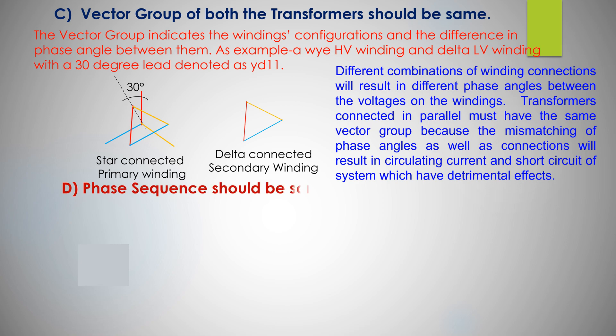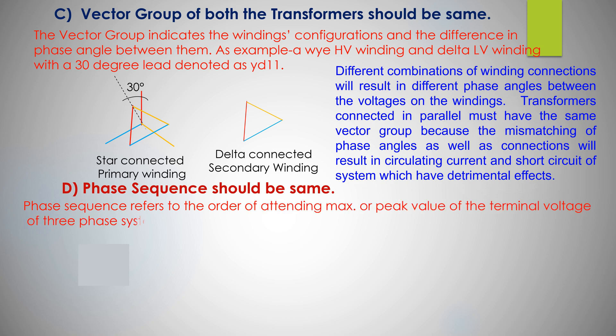Phase sequence should be same. Phase sequence refers to the order of attaining maximum value of the terminal voltage of three-phase system. In RYB phase sequence, R phase attains maximum value first, followed by Y and B respectively.